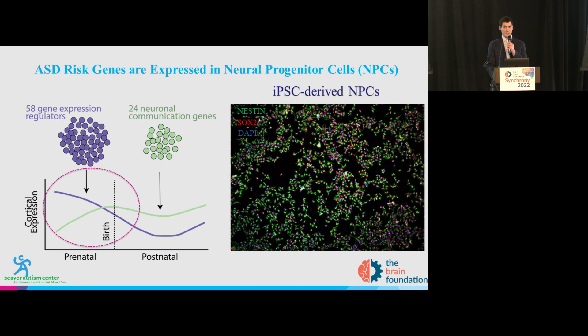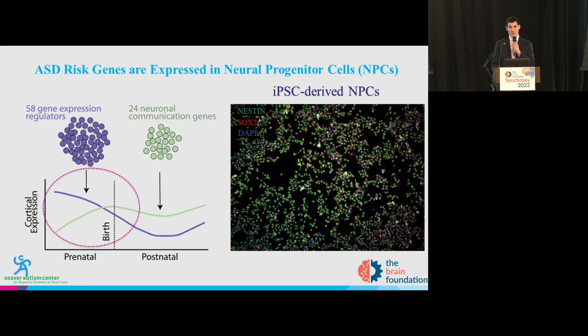One workaround is using a technique called reprogramming into induced pluripotent stem cells. In this method, we can take a person's blood or skin cells and convert them to induced pluripotent stem cells. IPS cells are defined by two main characteristics: they can be grown in unlimited quantities because they renew indefinitely, and they can be converted into any cell type, including all of these autism-relevant neuronal and neural-related cells.